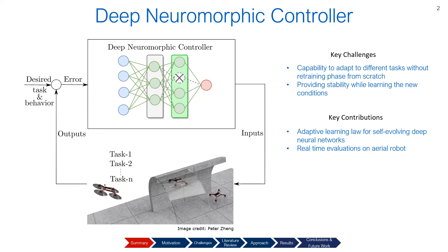The first challenge: we would like to have the capability to adapt to different tasks without a retraining phase from scratch. At the same time, we would like to provide stability while learning new conditions. Our contributions are twofold: first, we propose an adaptive learning law developed for self-evolving deep neural networks, and second, we propose real-time evaluations on ARRI robots.